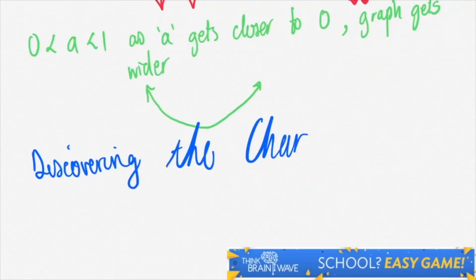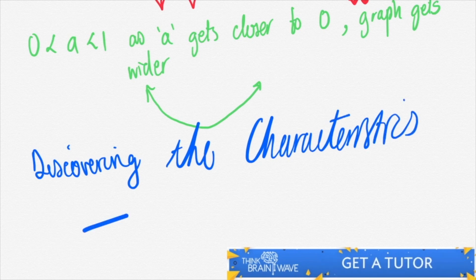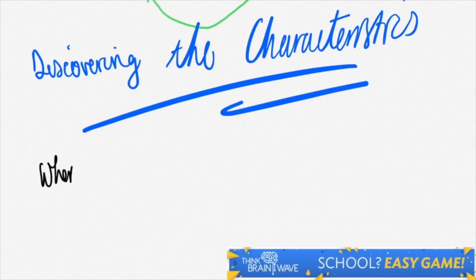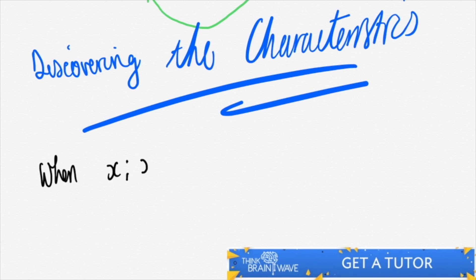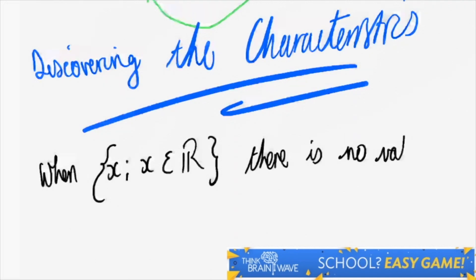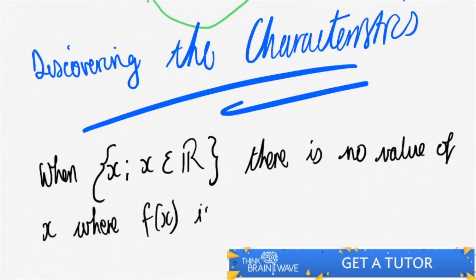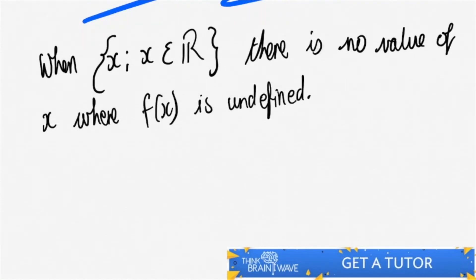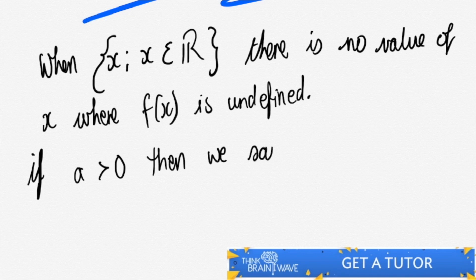Let's discover the characteristics of the parabola. When x is an element of all real numbers, there is no value of x where f(x) is undefined. This means that all values from negative infinity to positive infinity allow for an f(x) or a y value.